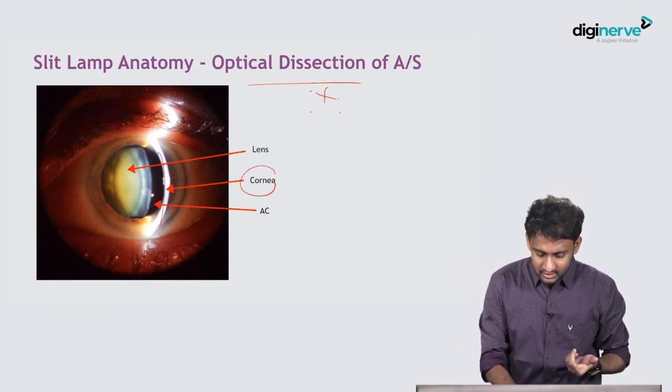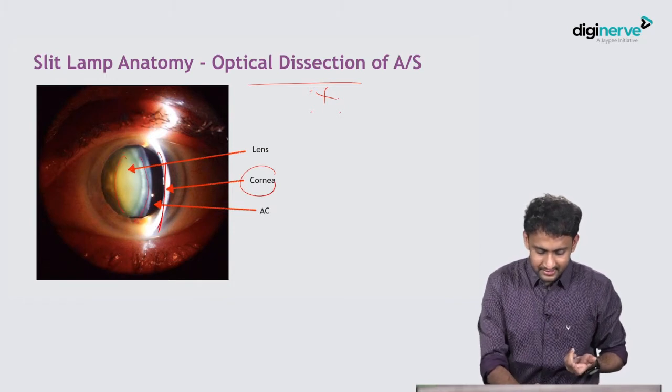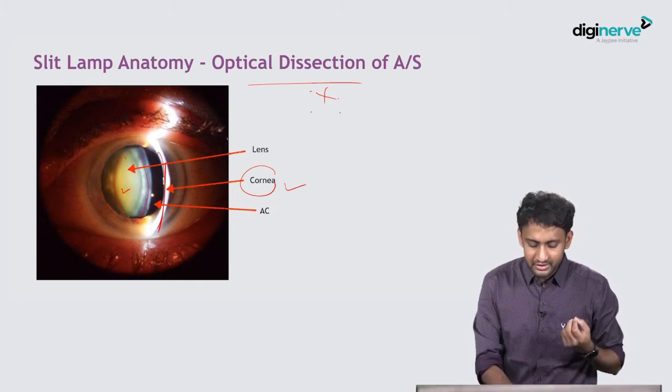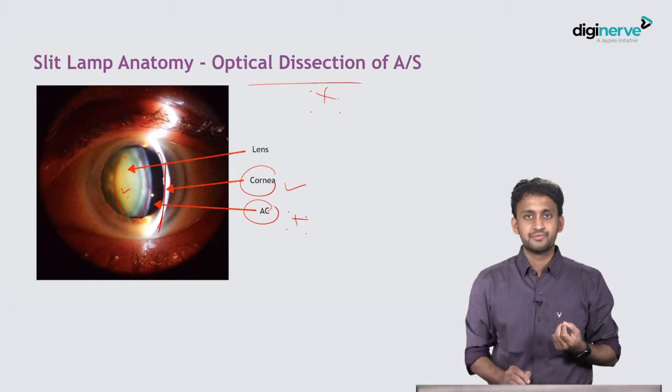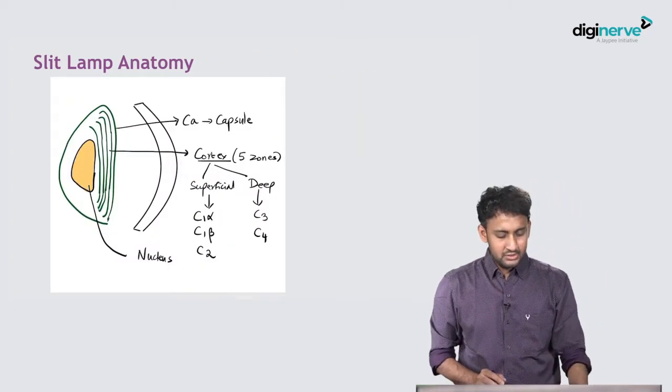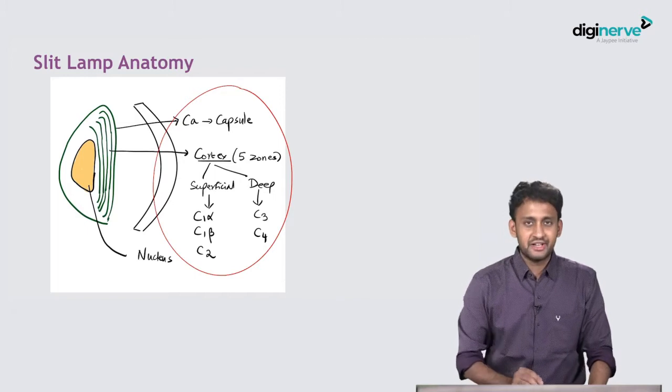This is going to be the cornea, this is going to be the lens. In between the cornea and the lens is going to be the anterior chamber.